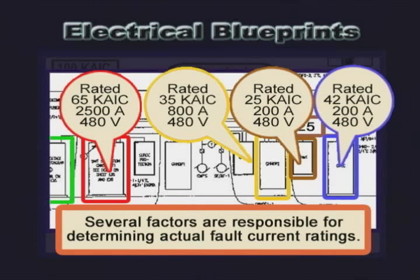Like the two 200-amp, 480-volt panels on the right — one has a 25,000-amp interrupting capacity rating, and the other a 42,000-amp interrupting capacity rating. It is not necessarily the size or voltage of a component that determines these values, as small wires and fuses can have large fault currents due to their location in the system.